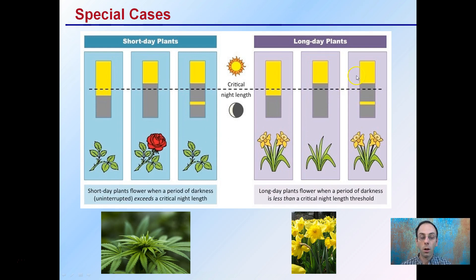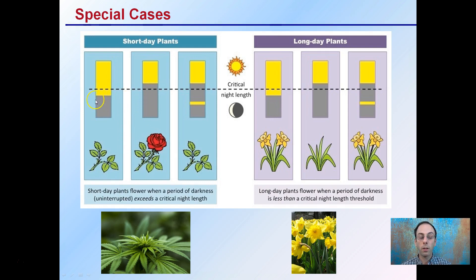The opposite will occur with long day plants, which is important for people in the floral industry forcing things into flower. For cannabis, whether you want flowering or not, it's very important to monitor the continual hours of darkness. Long hours of continual darkness will induce flowering; short hours of continual darkness will keep the plant in the vegetative state.